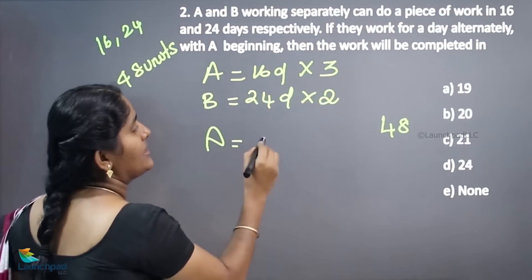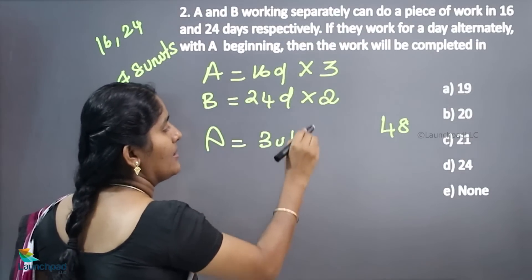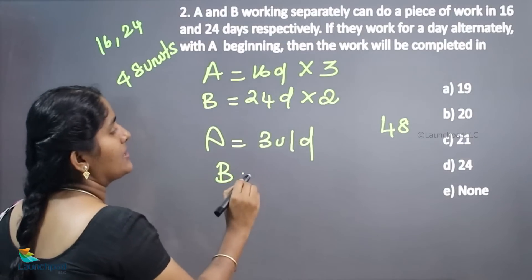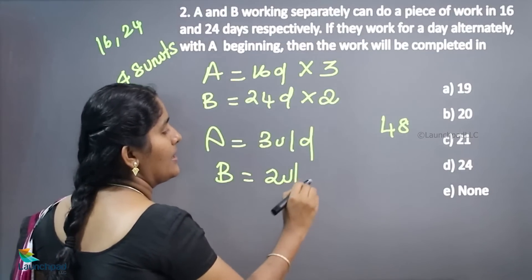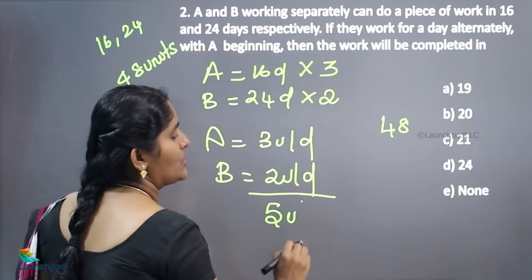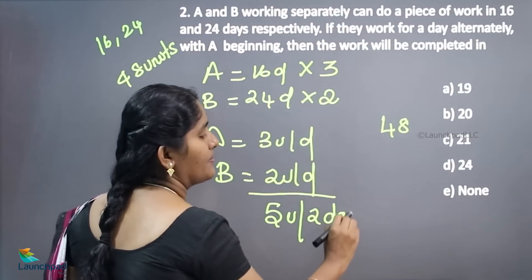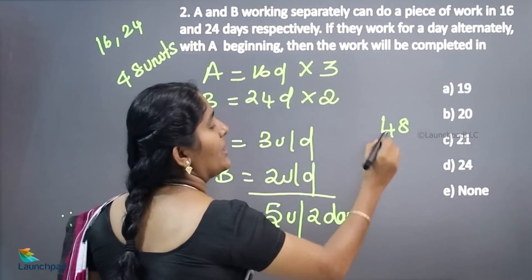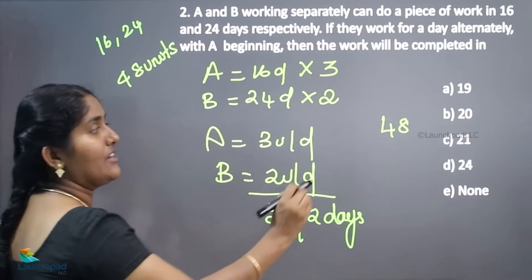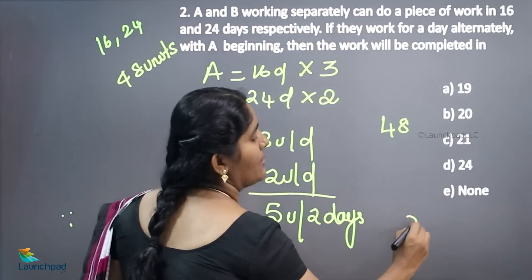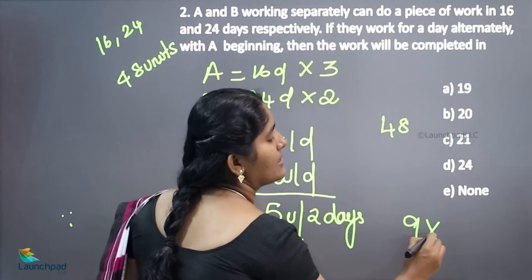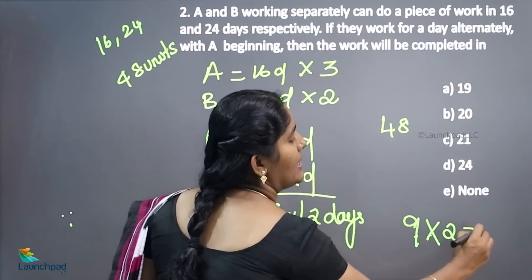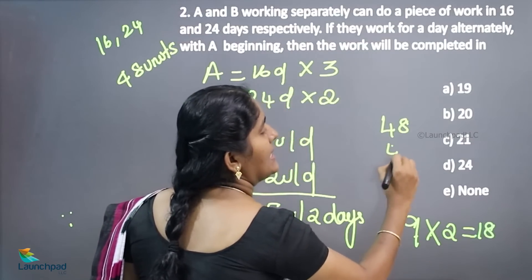A can complete 3 units per day. B can complete 2 units per day. Both can complete 5 units, 5 units for 2 days. So how many 5 units are there? 9 fives are 45. Just multiply this 9 into 2, 18 days.